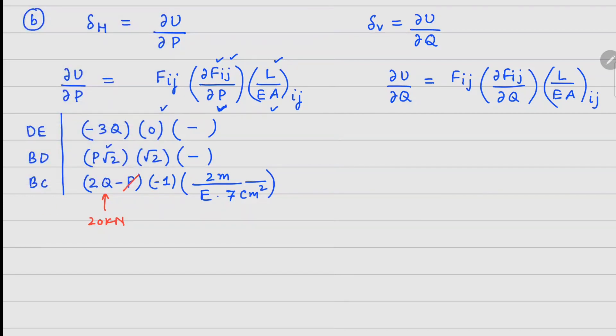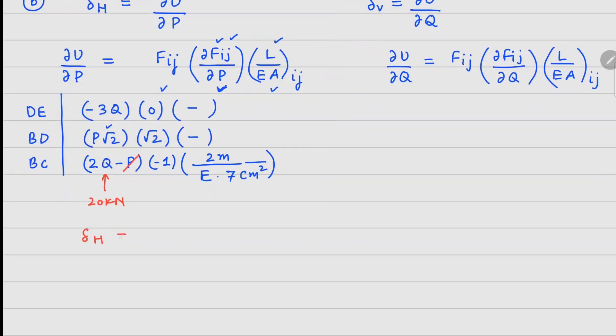If I substitute all these values in this equation, your delta horizontal can be calculated as 0.557 millimeters.